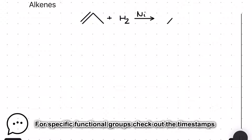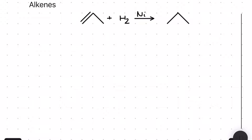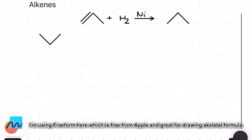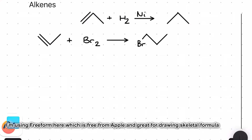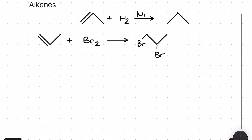Our first reaction is the alkene reacting with hydrogen in the presence of a nickel catalyst, which is a great example of a heterogeneous transition element catalyst, to make an alkane. For the second reaction we're going to be decolorizing some bromine as the halogen reacts with our alkene to make a dihaloalkane.